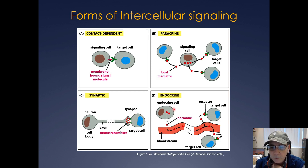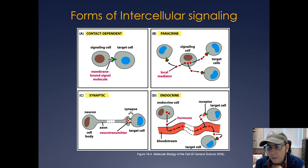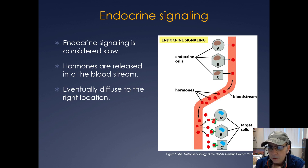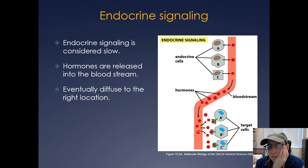Endocrine signaling involves an endocrine cell releasing hormones that diffuse into the bloodstream, travel throughout the body, and eventually reach a target cell with a specific receptor — sometimes an intracellular receptor rather than a plasma membrane receptor. Endocrine signaling is considered really slow because it relies on passive diffusion throughout the body, and the various target cells have specific receptors for the different endocrine hormones.